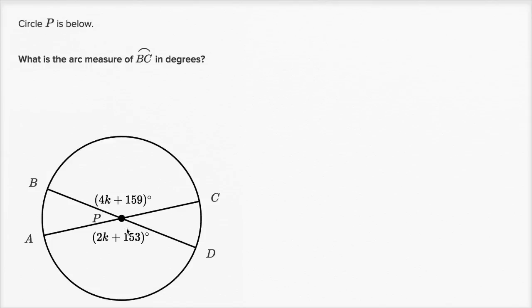We're told circle P is below. What is the arc measure of arc BC in degrees? This is point B, this is point C. Since they only gave us two letters, we want to find the minor arc — the shorter arc between B and C. If they wanted the major arc, they would have specified three letters like arc BAC or BDC. Since they just gave us B and C, we assume it's the minor arc.